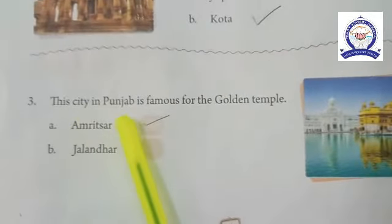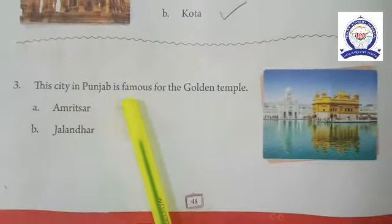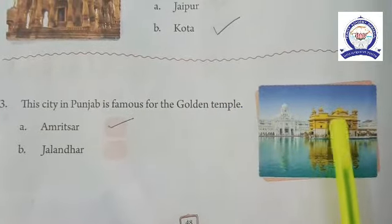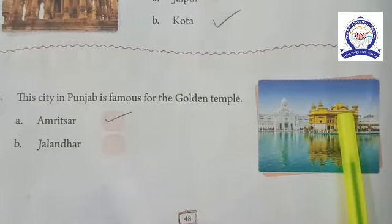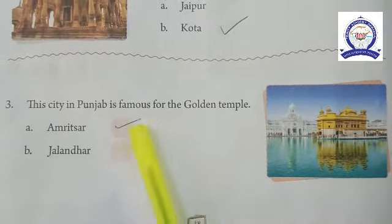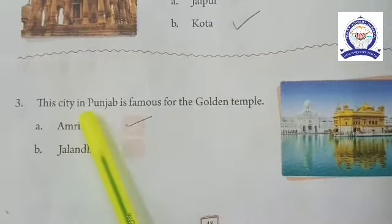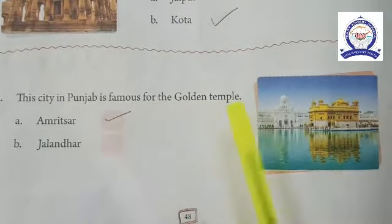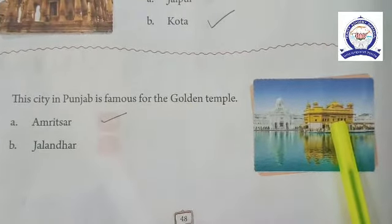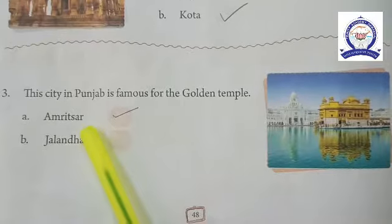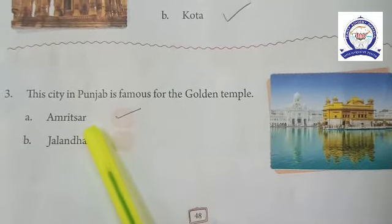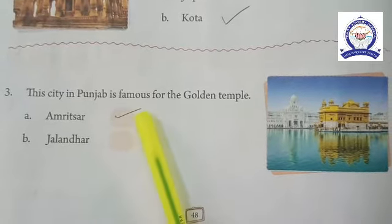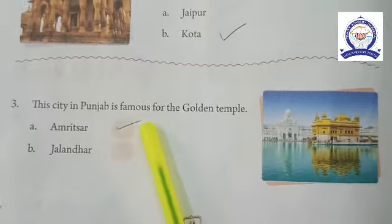Number three: this city in Punjab is famous for the Golden Temple. The answer is option A — Amritsar.